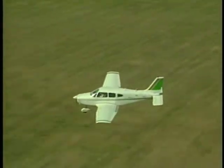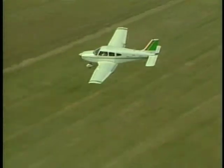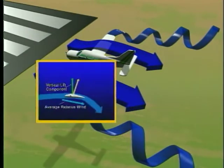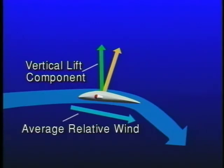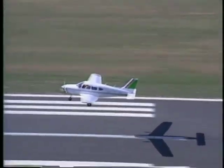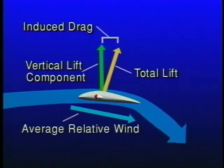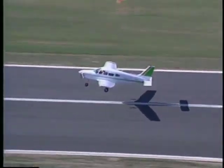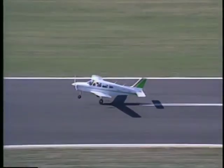The phenomenon known as ground effect occurs when the Earth's surface interferes with normal airflow patterns, thus causing a reduction in induced drag. During flight at altitude, the downwash created by wingtip vortices causes the average relative wind to be inclined downward. Because lift acts perpendicular to the average relative wind, total lift is inclined aft by the same amount. The component of lift acting in a rearward direction is induced drag. As your airplane descends to within one wingspan of the ground, the wingtip vortices and resulting downwash are deflected horizontally, moving the average relative wind closer to horizontal and the total lift vector closer to vertical, thus increasing the vertical component of lift and decreasing induced drag. As a result, the airplane tends to fly longer in ground effect or float down the runway. This can be a problem on shorter runways.